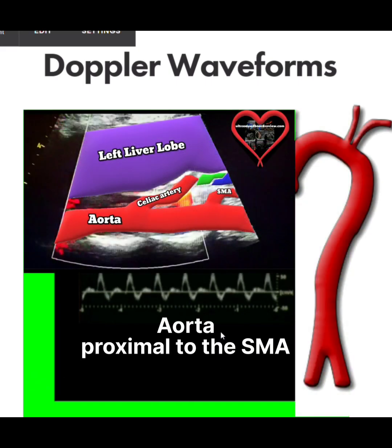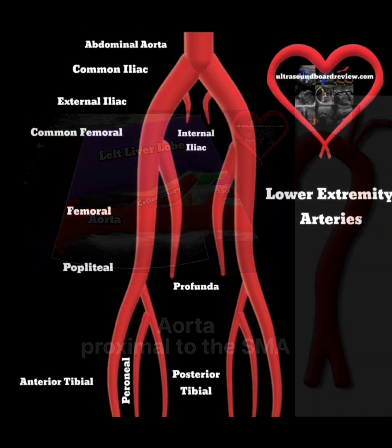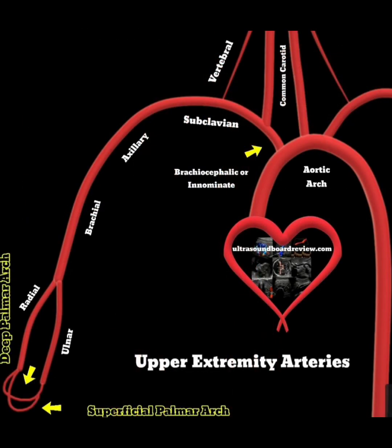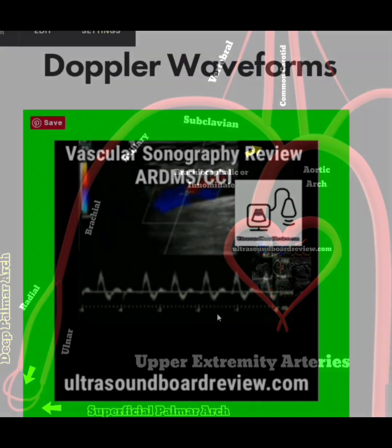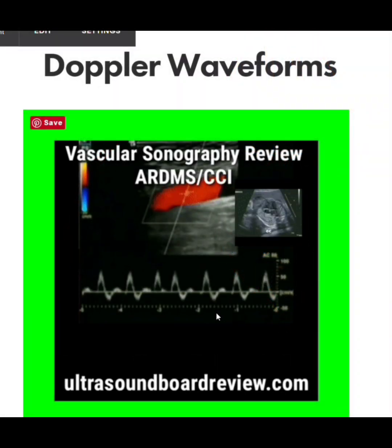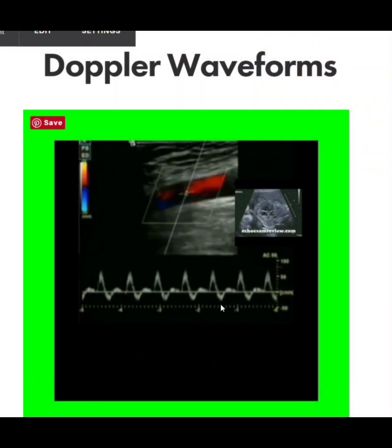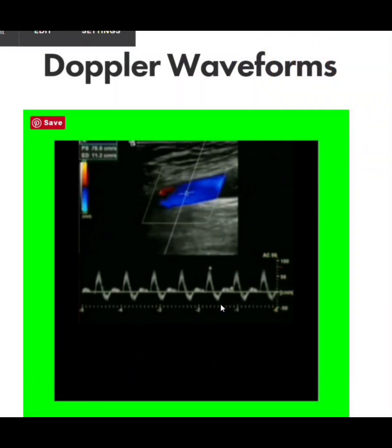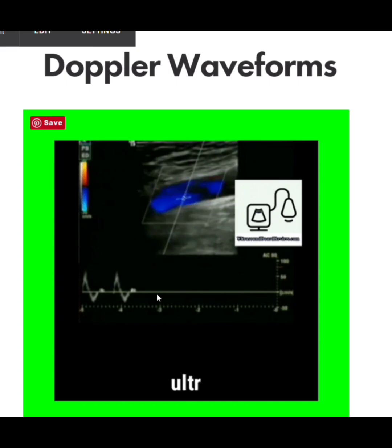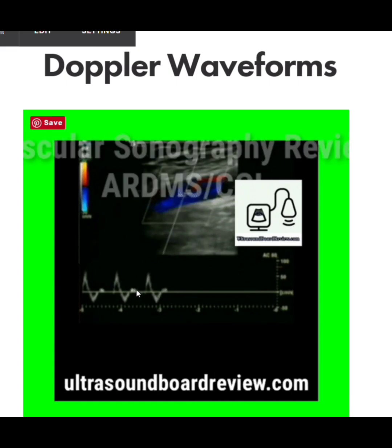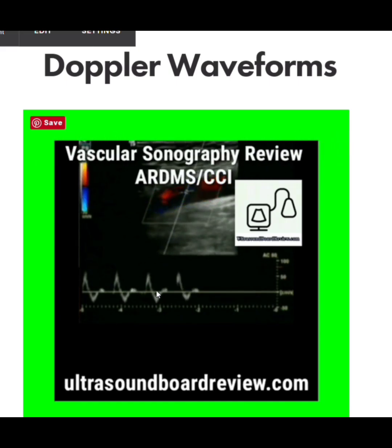You can expect to see this type of waveform in any artery that's not feeding an organ — including the aorta, all the arteries in the leg, all the arteries in the arm, and the very proximal portion of the carotid artery. But as you move up the carotid distally, you'll start to see more diastolic flow.